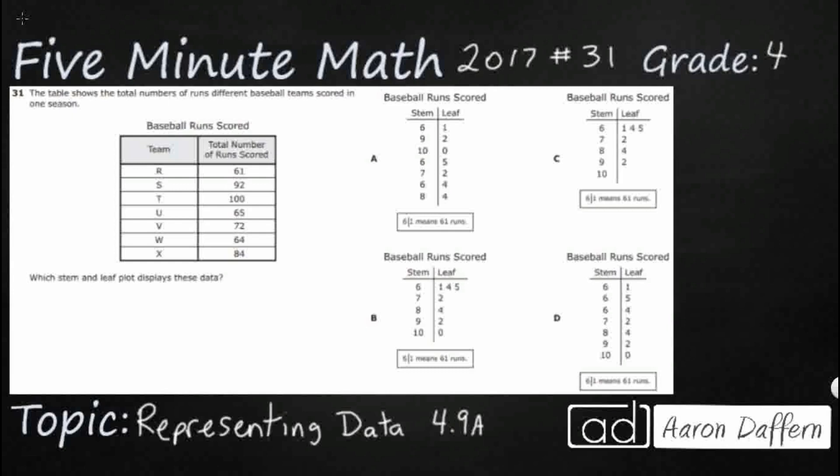So we have a table here that shows the total numbers of runs for different baseball teams scored in one season and you see that our teams from R to X are in order but the total numbers of runs scored are all mixed up. So we simply need to put that into a stem and leaf plot but in order for us to do that it's going to be helpful if we can put these in order because that is actually how a stem and leaf plot should work.